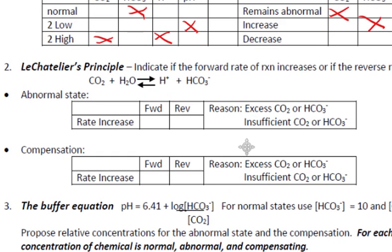Now on to part 2. Here we need to indicate which rate will increase — the forward or reverse — and provide a reason. Because there is an excess of CO2, that will drive the reaction forward, and we simply circle 'excess CO2.' For compensation, the bicarbonate will increase, which will increase the reverse rate of reaction, and we simply circle 'excess bicarb.'